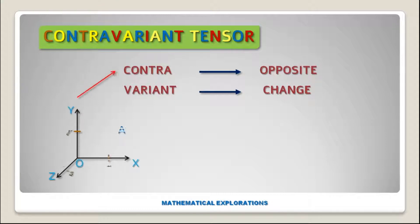Now let us consider a rank-1 tensor, that is a vector. Let the displacement be from point O to point A. On the X axis the component is X, on the Y axis the component is Y, on the Z axis the component is Z. Along the X axis the basis vector is i-cap, along the Y axis the basis vector is j-cap.